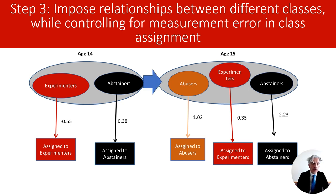Having defined a fixed measurement model, I can now impose structural relationships between latent classes at each time point. The latent classes are considered nominal variables, even when we might think of them as ordered. So the associations between latent classes are expressed by multinomial logistic regressions — regressions of the latent classes at age 15 on the latent classes at age 14. Since we are using logistic regressions, associations can be expressed by odds ratios; for example, the odds of being an abuser rather than an abstainer at age 15 if someone was an experimenter rather than an abstainer at age 14.